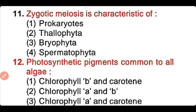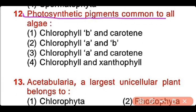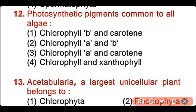Question number 12: Photosynthetic pigments common to all algae are chlorophyll B and carotene, chlorophyll A and B, chlorophyll A and carotene, or chlorophyll and xanthophyll? The correct answer is option 3. Chlorophyll A and carotene are present in all algae.